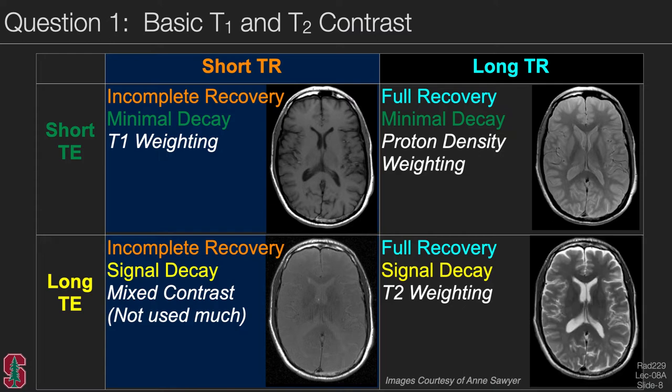All these images are acquired with spin echo sequences, showing that spin echo has very versatile contrast. Keep in mind that T1 weighted and T2 weighted sequences are kind of like opposites: for T1 weighting we have a short repetition time and short echo time, and for T2 weighting we have a long repetition time and long echo time.